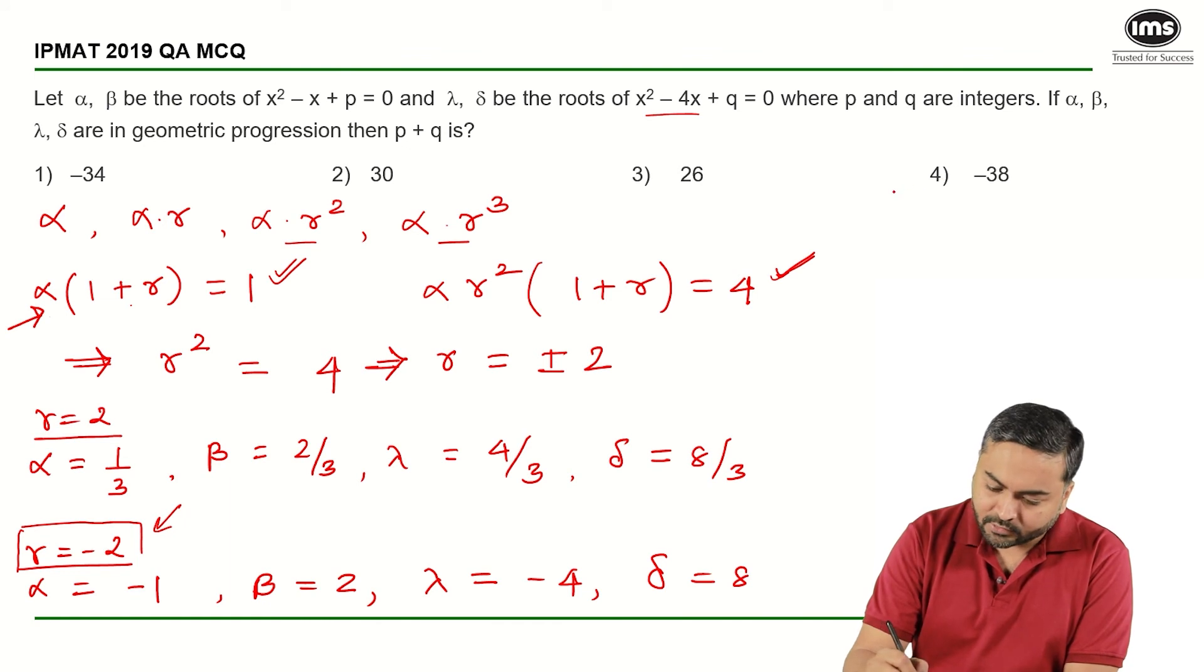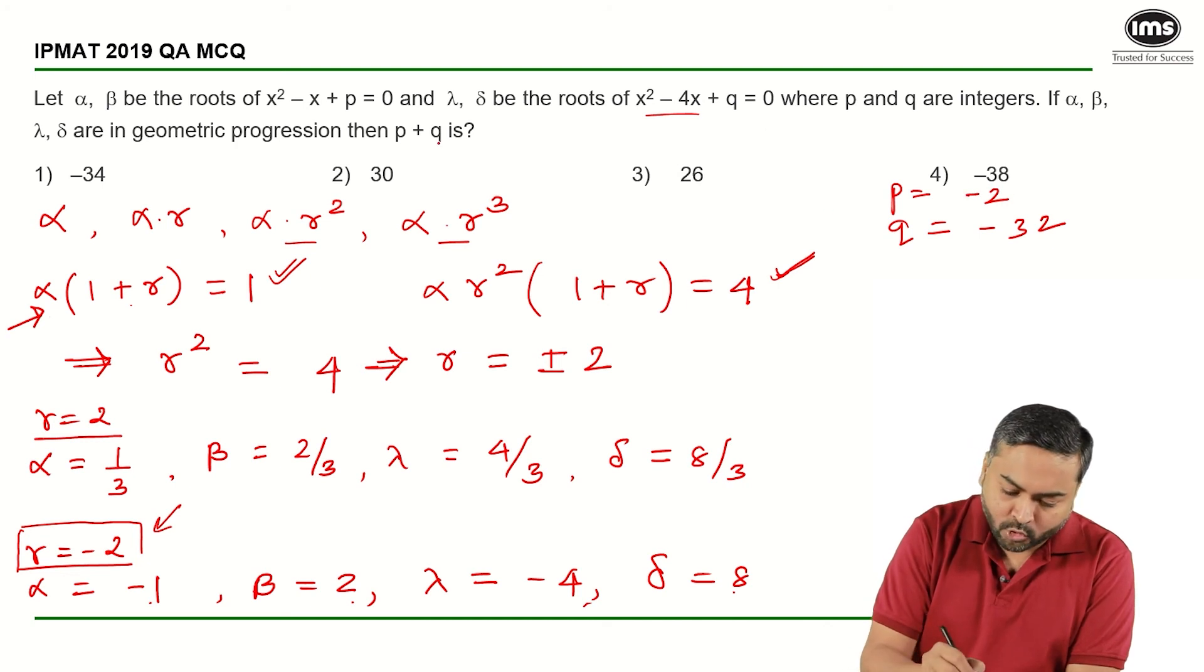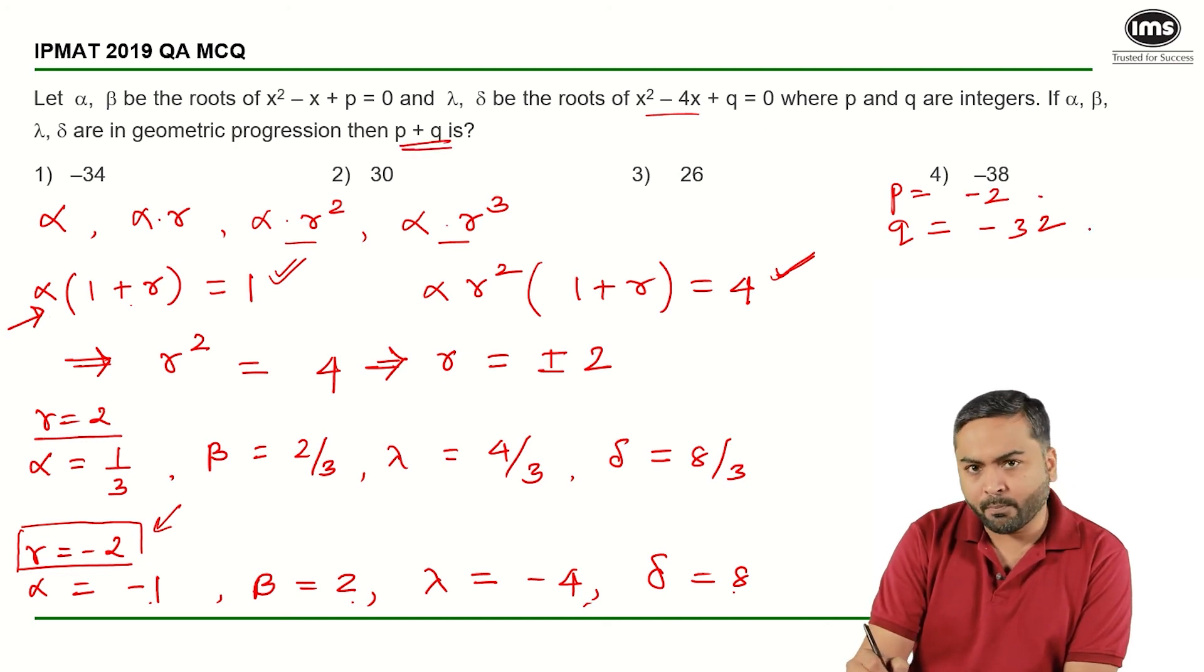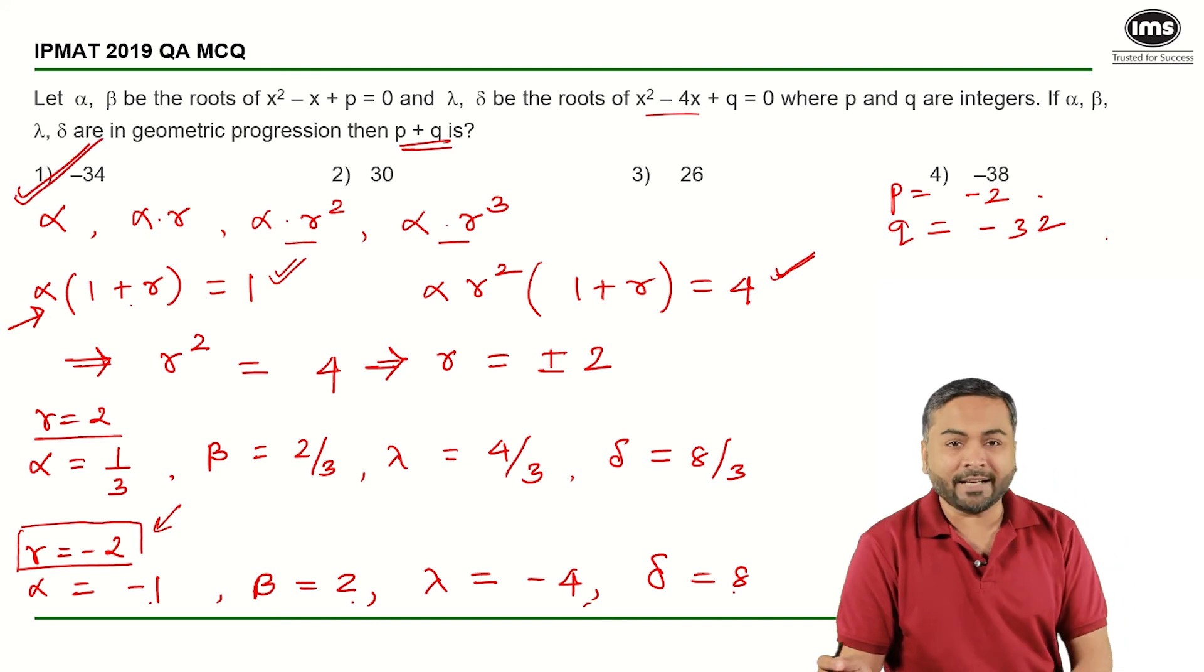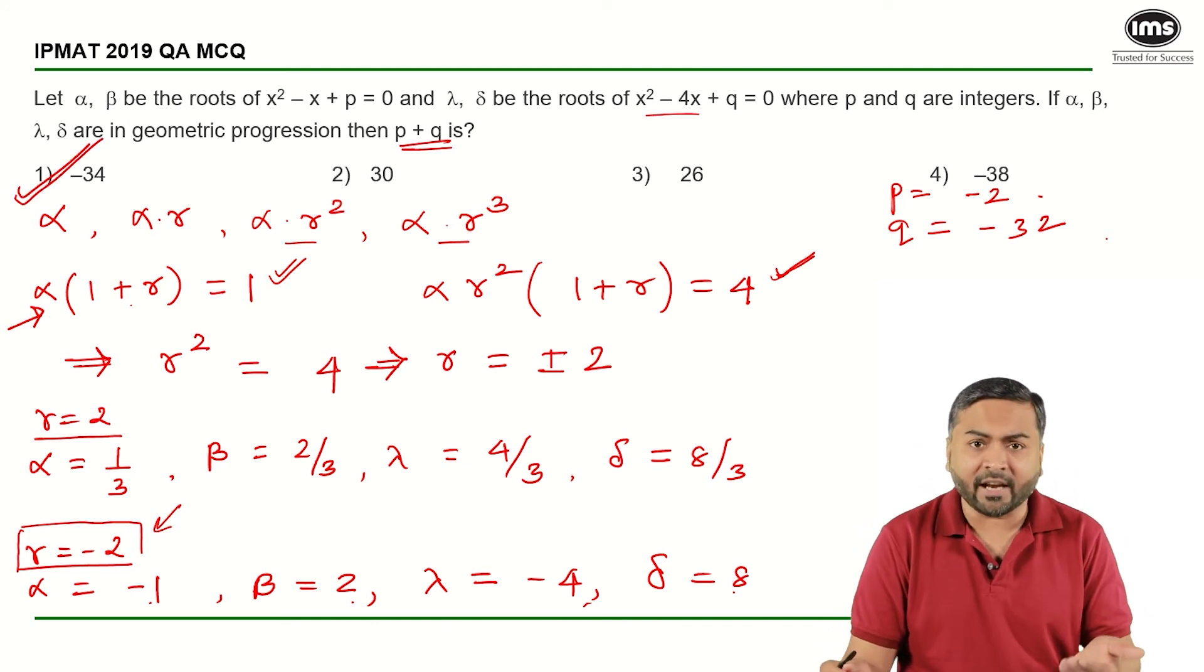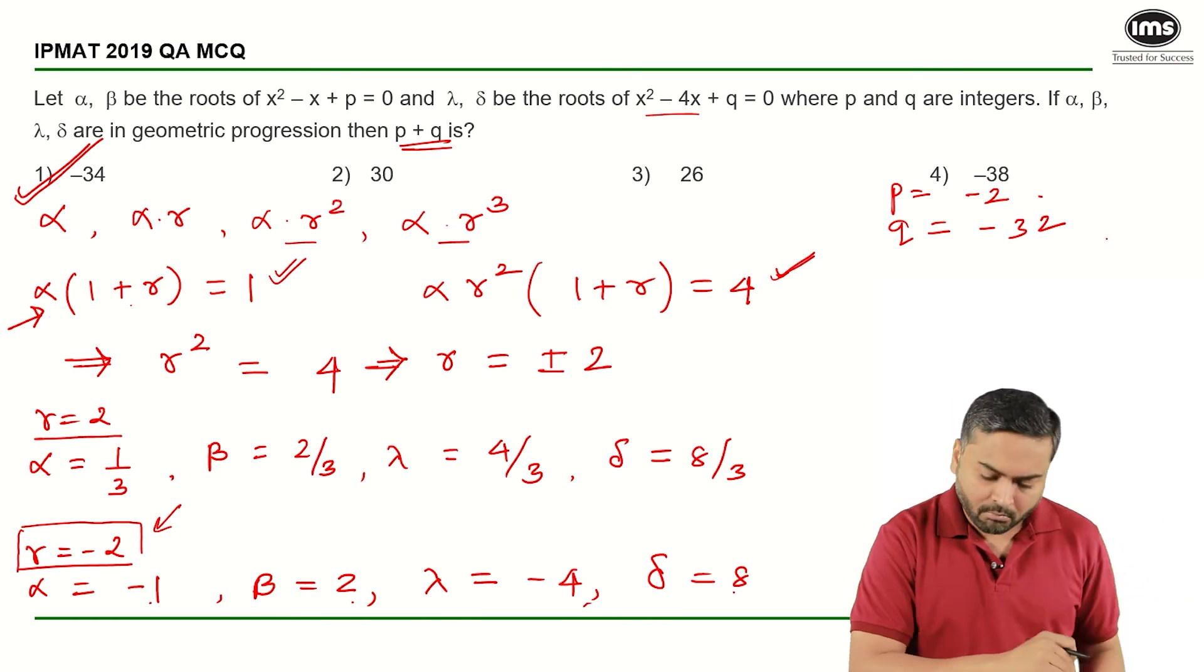What is P in this case? P is minus 1 into 2, that is minus 2, and Q is minus 4 into 8, that is minus 32. So my answer P plus Q will be minus 2 plus minus 32, that is minus 34, and that is the answer we arrived at with the earlier approach.